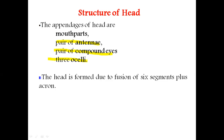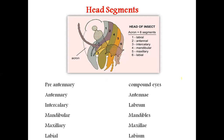The head is generally formed by six segments: the acron plus the pre-antennal segment bearing the compound eyes, the antenna segment, the intercalary segment bearing the labrum, the mandibular segment bearing the mandibles, the maxillary segment bearing a pair of maxillae, and lastly the labial segment producing the labium.